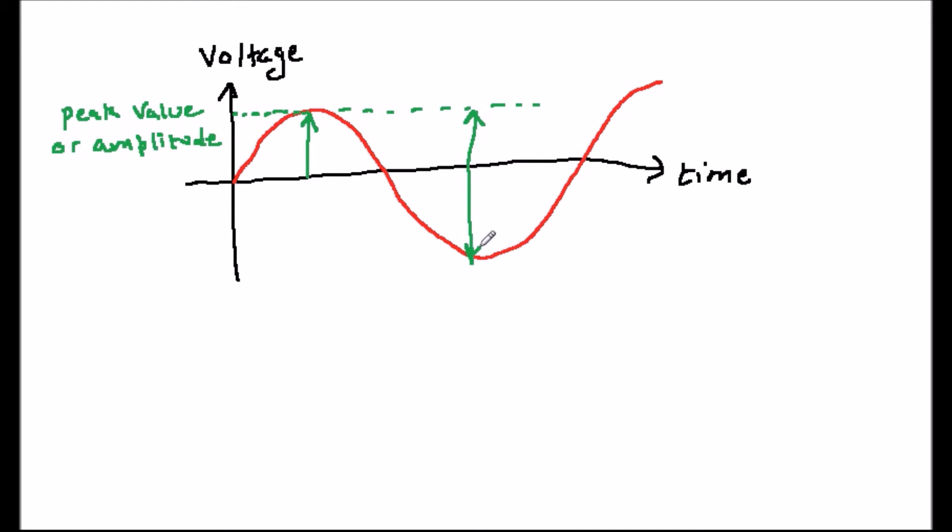The maximum variation from positive to negative of the signal is sometimes called the peak to peak value and for the mains this is twice the amplitude or peak value so it is 648 volts. For many waves it's possible to calculate an average value of the signal. However, this is of little significance for many signals.